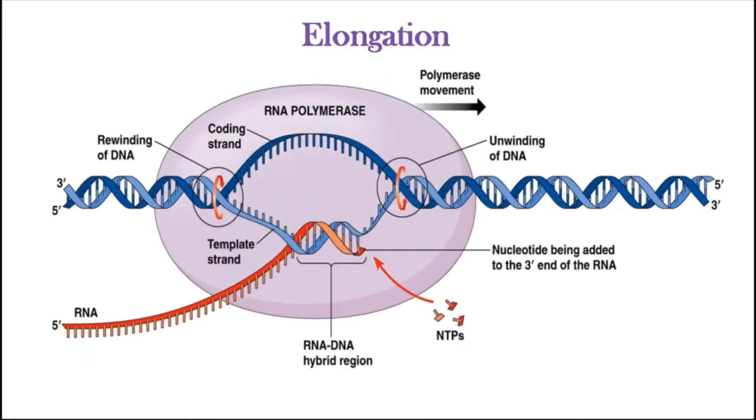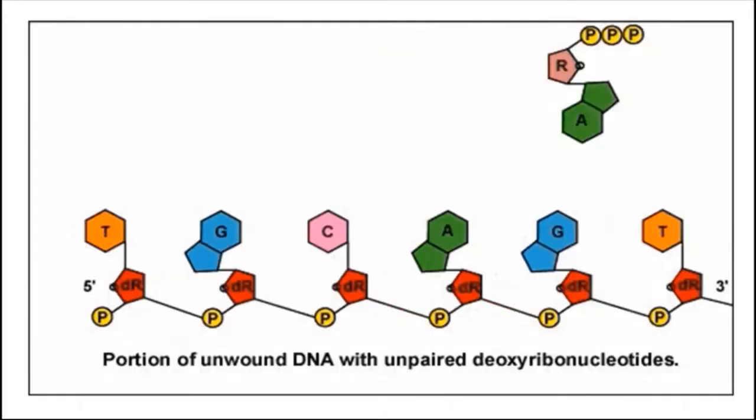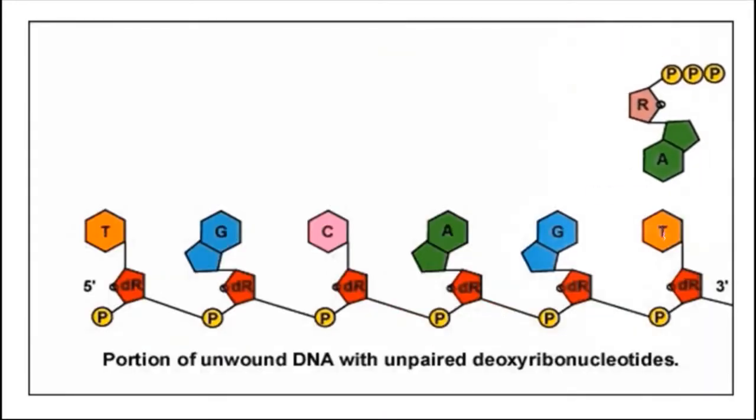Elongation: During elongation, the RNA polymerase moves along the DNA template. For each nucleotide in the template, RNA polymerase adds a complementary RNA nucleotide to the 3' end of the RNA strand. During formation of new RNA strand, base pairing rule is strictly followed.